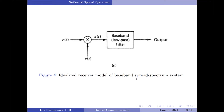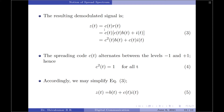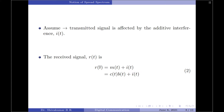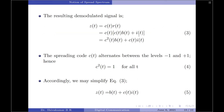Figure 4 shows the idealized receiver model for the baseband spread spectrum system. To recover the original data sequence b(t), the received signal r(t) is applied to a demodulator consisting of a multiplier followed by a low-pass filter. The multiplier is supplied with a locally generated PN sequence that is an exact replica of the one used at the transmitter, and the receiver operates in perfect synchronization with the transmitter. The demodulated signal z(t) is given as z(t) = c(t) × r(t), equation 3. Substituting r(t) from equation 2 gives z(t) = c²(t) × b(t) + c(t) × i(t).